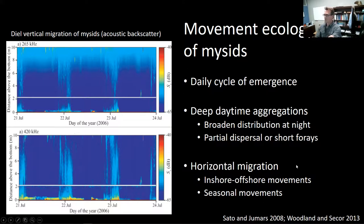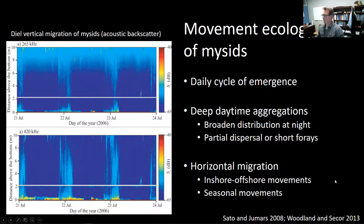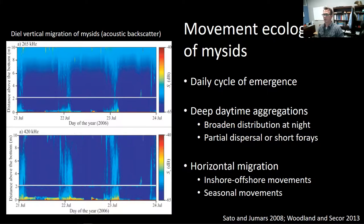Many mysids also undergo horizontal migrations, including inshore-offshore movements on daily or seasonal time scales. More broadly, there are larger seasonal migrations — some evidence that we see seasonal movements into and out of tributaries within Chesapeake Bay, and so there are broad, large-scale seasonal movements of populations as well.